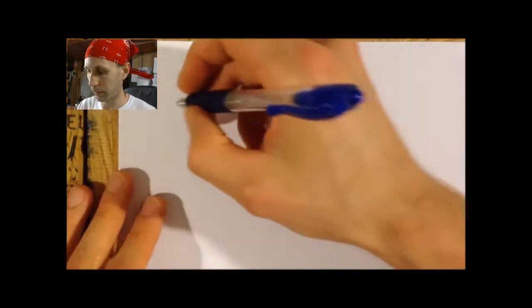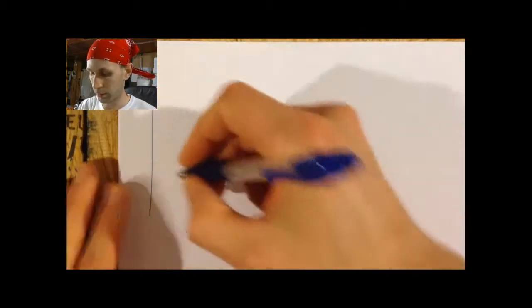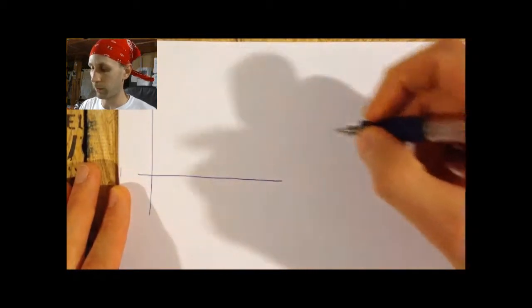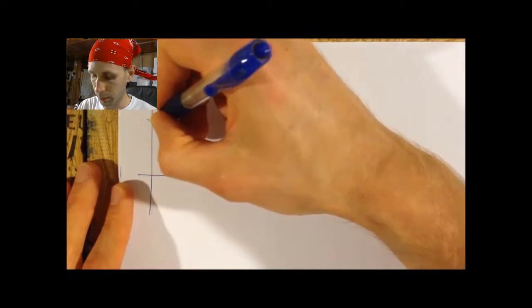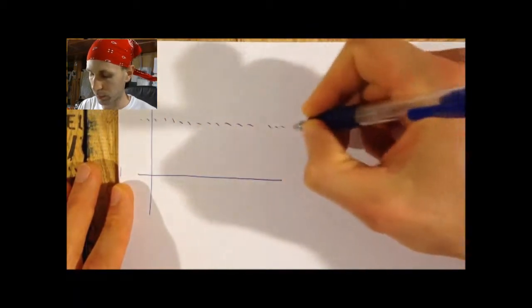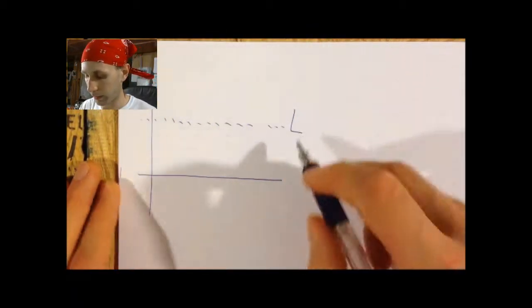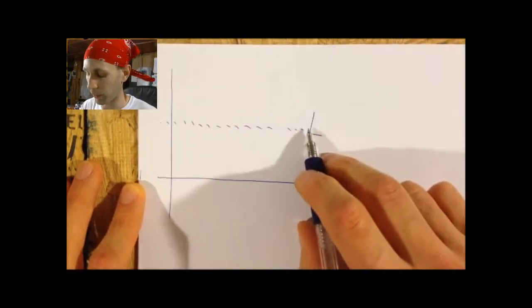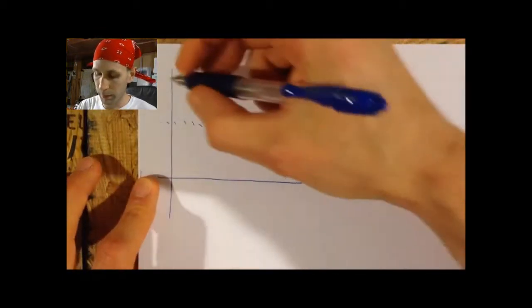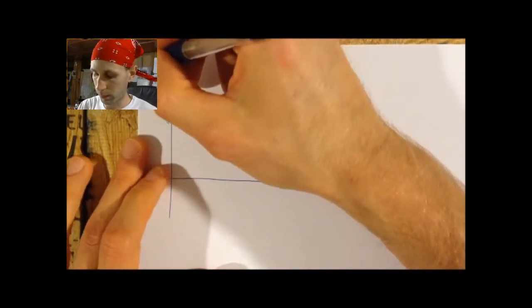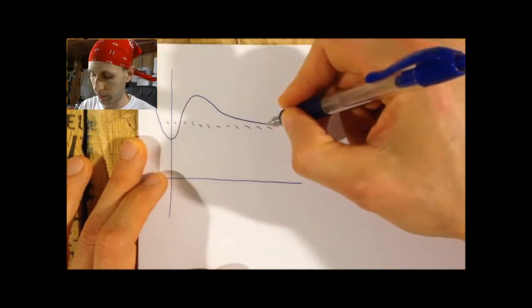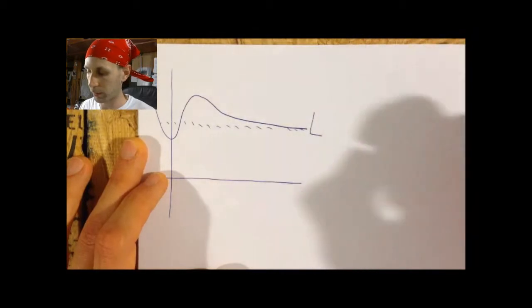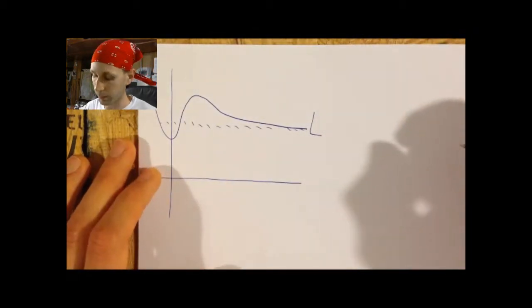What that means is, let's say we have a function approaching some number, we'll call that L — that's a y-value. We know that the function at some point is going to approach L and never stop, just like what we understand to be a horizontal asymptote.